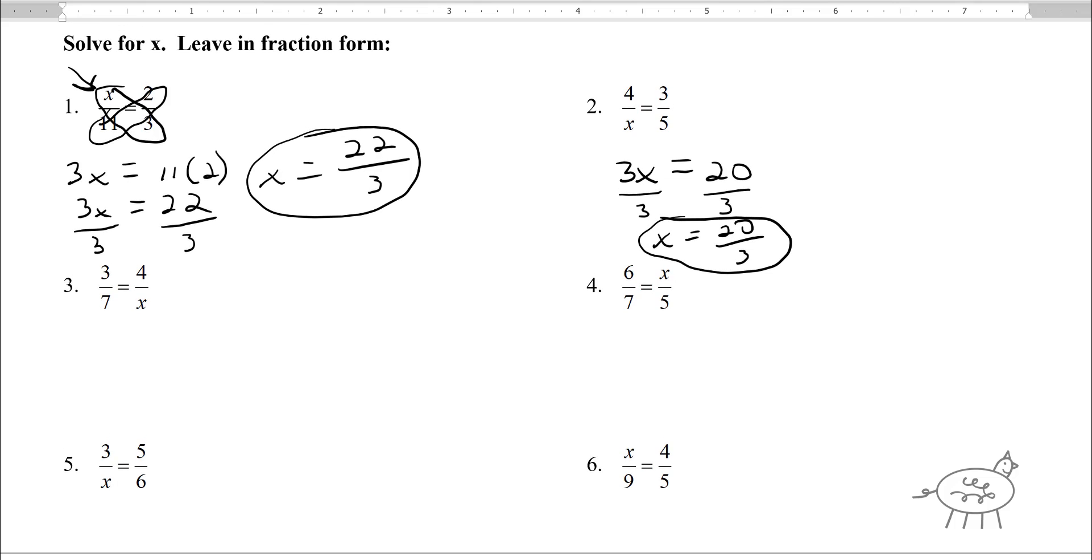Let's do number 3 here. So 3 times x is 3x. And again, it's 7 times 4. 7 times 4, which is 28. And then divide by 3. So x equals 28 over 3.